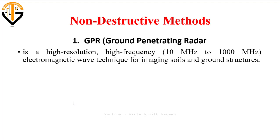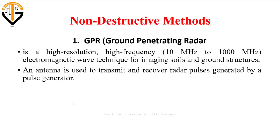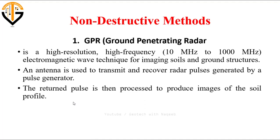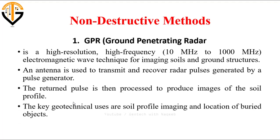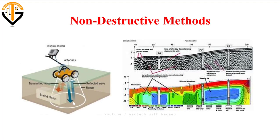GPR is a non-destructive technique used to obtain images of soils and ground structures without destroying the soil strata. An antenna is used to transmit and recover radar pulses generated by a pulse generator. The returned pulse is then processed to produce images of the soil profile. The key geotechnical uses are soil profile imaging and location of buried objects.